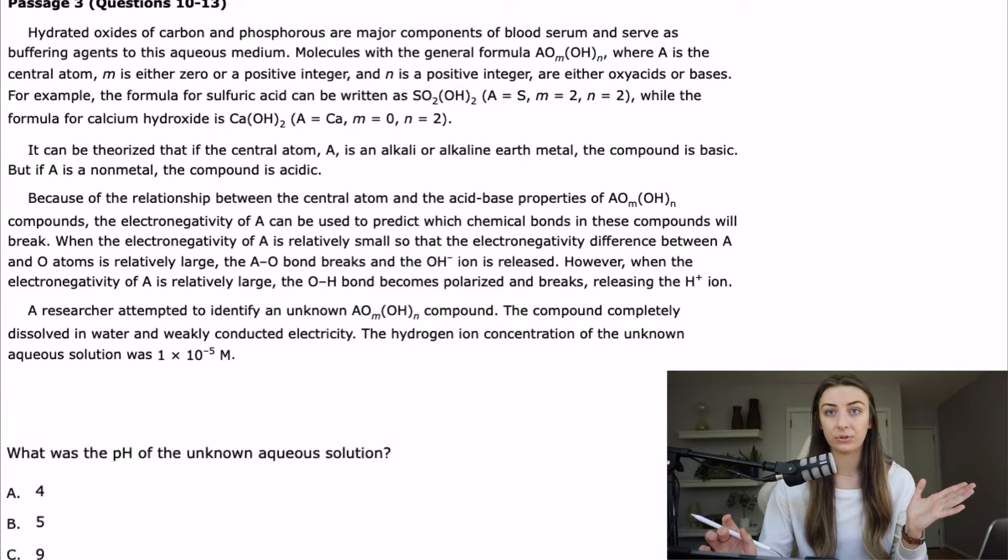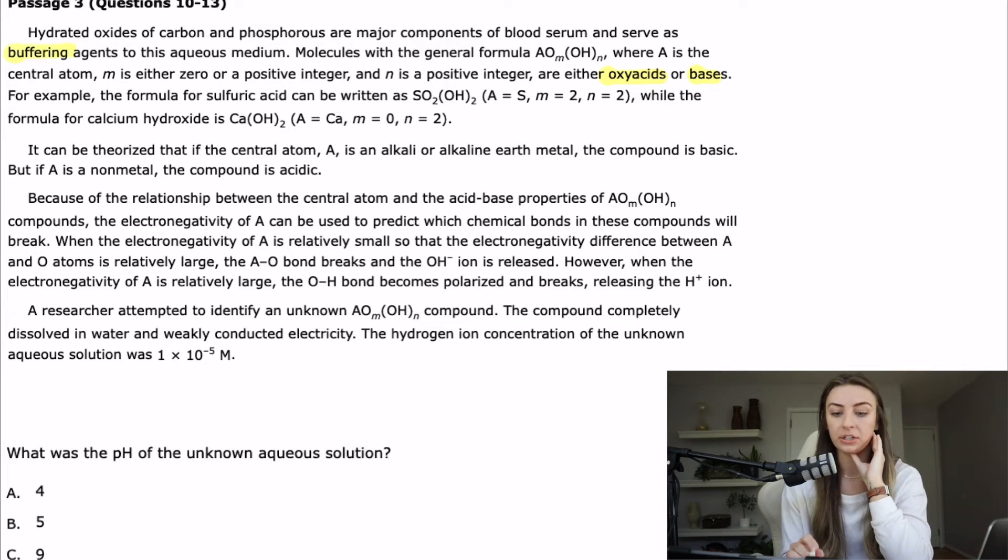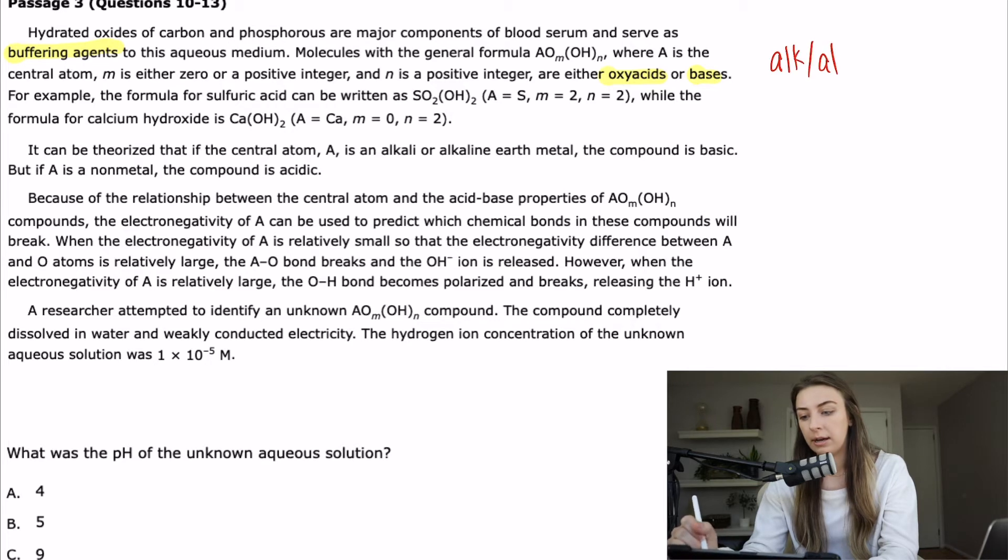So far I haven't written anything in my flow chart. I haven't come across anything that I feel is too confusing or that needs to be put in like a relationship kind of term. I do notice some basic sciences here, oxy acids and bases, buffering agents. It can be theorized that if the central atom A is an alkali or alkaline earth metal the compound is basic. But if A is a non-metal the compound is acidic. Even though that's pretty simply laid out there, I'm going to make a little note on my flow chart. So alkali or alkaline earth equals base and then non-metal is acidic.